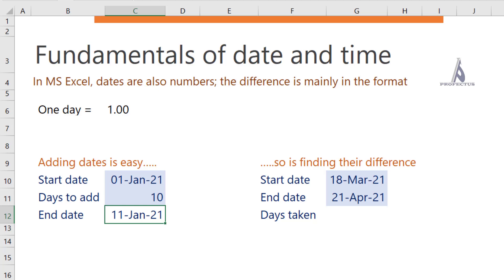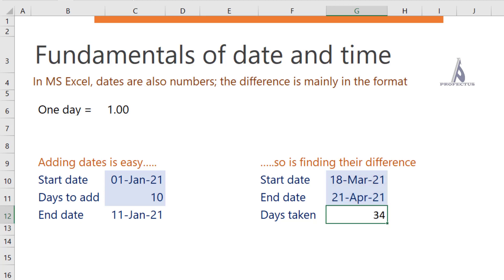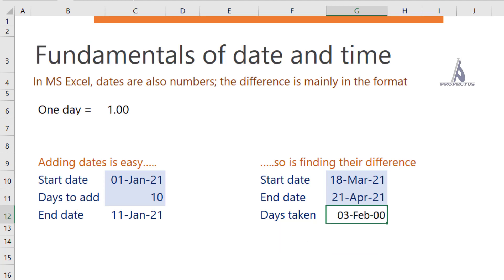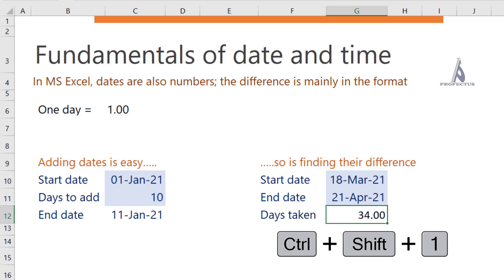It's also very easy to find the difference between two dates. If the end date is 21st April and the start date is 18th March, you can simply do 21st April minus 18th March. Sometimes dates may appear as numbers. To change from number to date format use Ctrl+Shift+3, and to change back to number format use Ctrl+Shift+1.